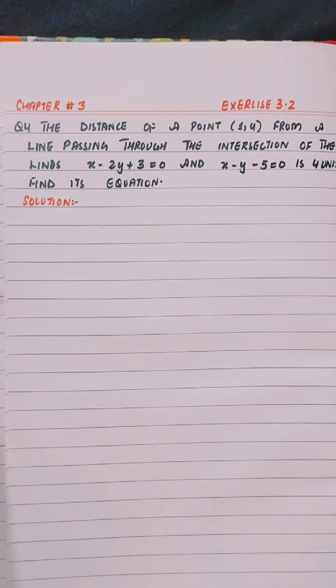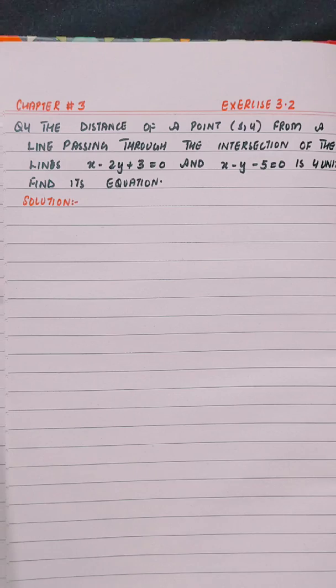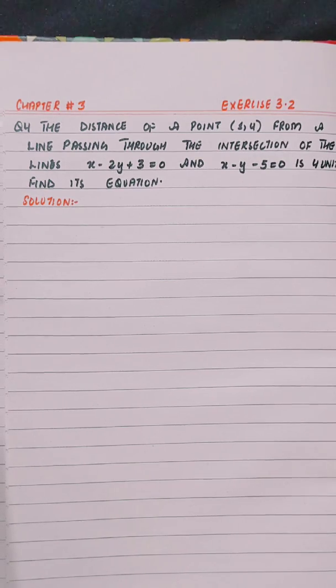Hello everyone, this is Rabi Aslam. In this video, we will solve question number 4 from exercise 3.2, chapter number 3. The distance of a point (1, 4) from a line passing through the intersection of the lines x minus 2y plus 3 equals 0 and x minus y minus 5 equals 0 is 4 units. Find its equation.